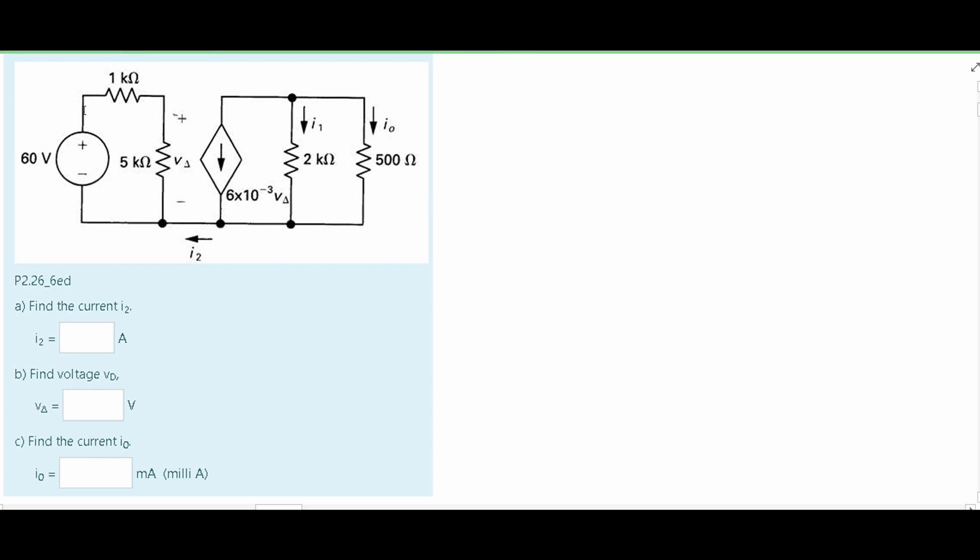For this problem, we are given a diagram and we are asked a couple questions. We are told to find the current I2, then also asked to find the voltage VD and find the current I0.